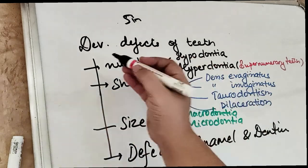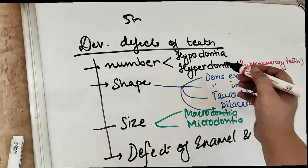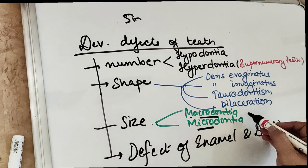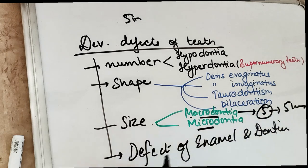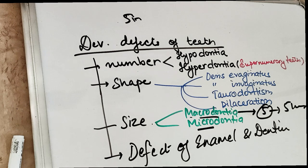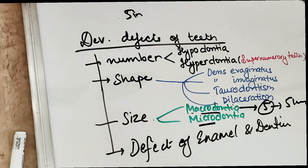In the upcoming '5 in 5' series, we are going to cover all of the developmental defects — each disease in 5 points in 5 minutes, covering conditions like macrodontia and microdontia. This is part one of the developmental defects of the teeth — now we know what is causing them. We'll cover each condition in upcoming videos. If you enjoyed the video, give it a thumbs up, comment below, and support on Paytm or PayPal. Take care — keep reading, keep learning, see you soon!